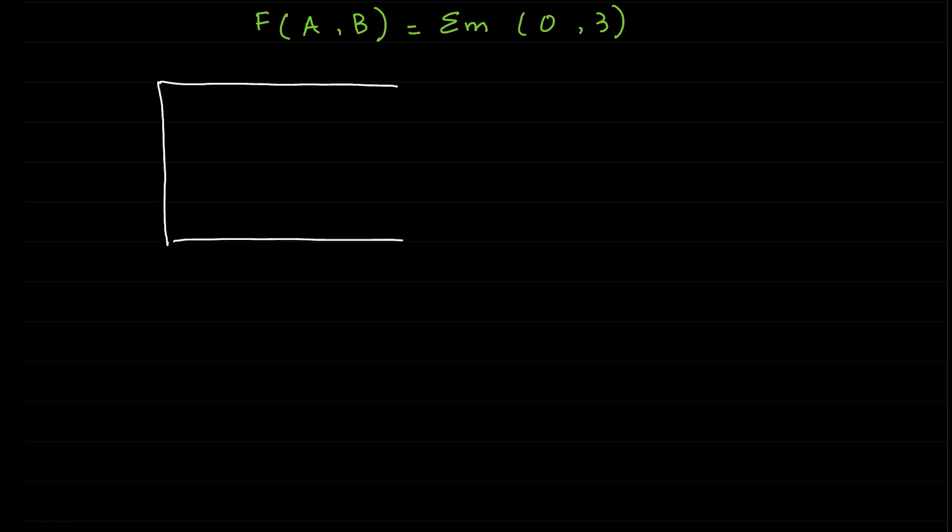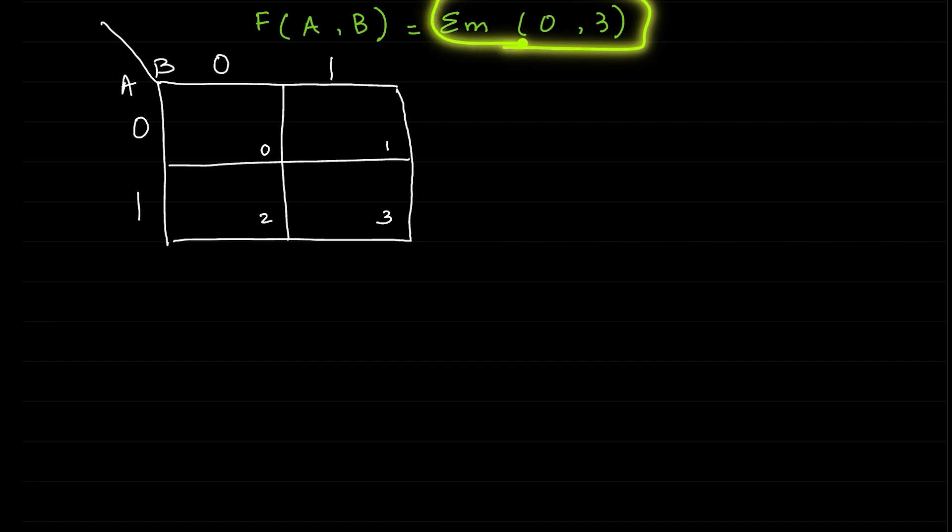So let us draw K-map for the given min term. Divide the cell into A and B, call this 0, 1, 0, 1. Next what we will do is give numbers to each cell of the K-map incrementally: 0, 1, 2, and 3.